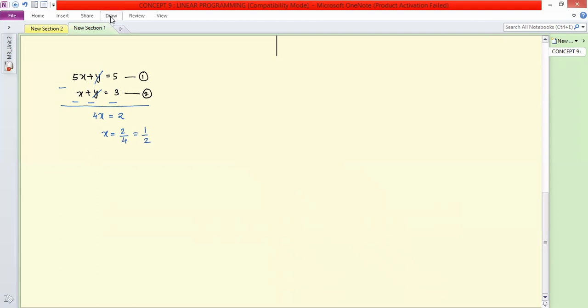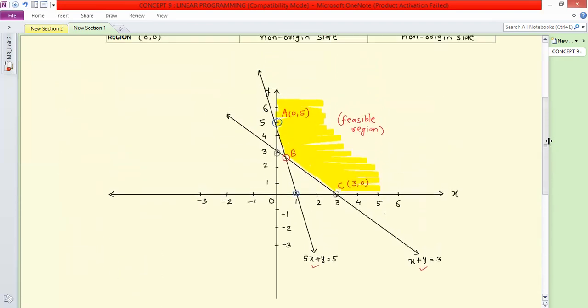Now find y's value. We have x plus y equal to 3. Putting x equals 1 by 2, y's value is 3 minus 1 by 2. Cross multiplication gives 6 minus 1, which is 5 by 2. So y is 5 by 2. Point B's coordinates are (1/2, 5/2). Is it clear?